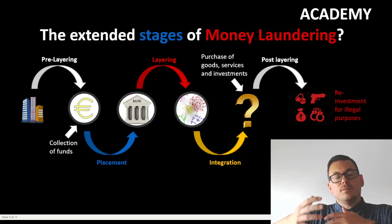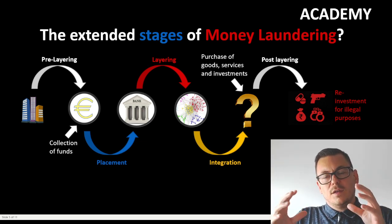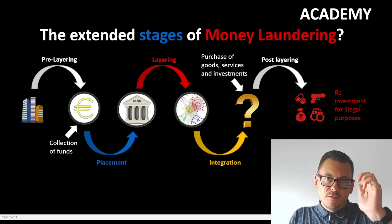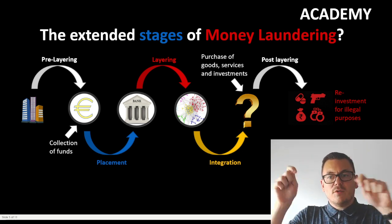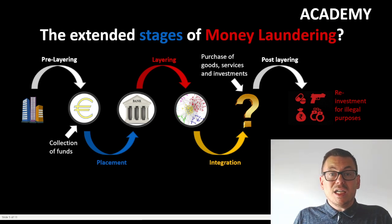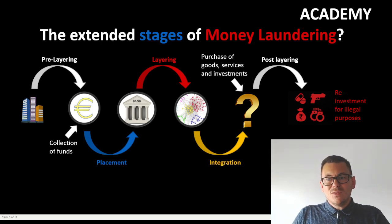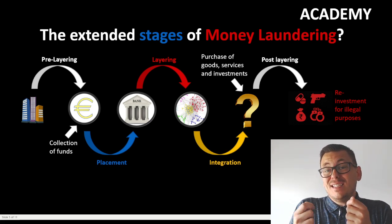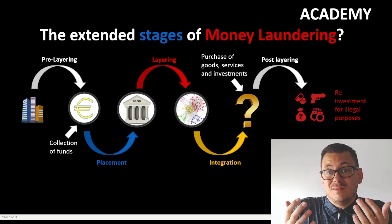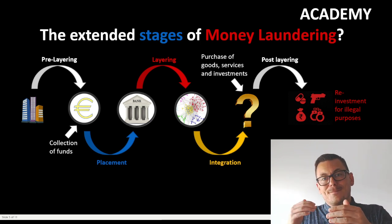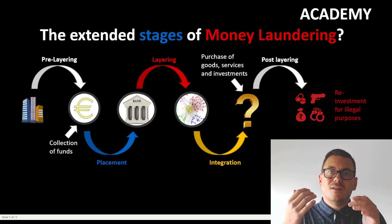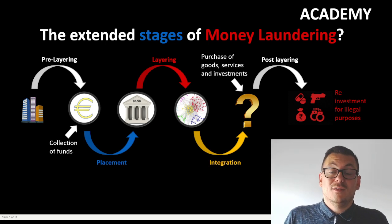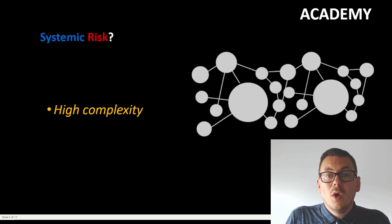So in the extended stages of money laundering, we have: placement — putting it into the financial sector; layering — transferring it around to hide the origin; integration — where it comes back through goods, services, purchases, or reinvestment in products for further criminal activities; and post-layering — where those products re-enter the illicit economy to support further criminal activities.